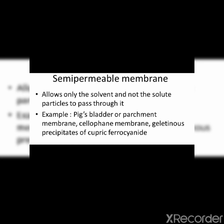The semi-permeable membrane allows only the solvent and not the solute particles to pass through it. Examples of semi-permeable membranes include pig's bladder or parchment membrane, cellophane membrane, and gelatinous precipitates of cupric ferrocyanide.